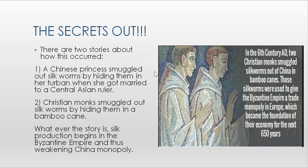The making of silk was China's long-kept secret — exposing it was punishable by death. Eventually, the world figured out the secret. The first story is that a Chinese princess smuggled out silkworms by hiding them in her turban when she married a Central Asian ruler. The second story, which has more credence, involves Christian monks who smuggled out silkworms hidden in the hollowness of a bamboo cane. Whatever the true story, silk production eventually began in the Byzantine Empire, weakening China's monopoly.